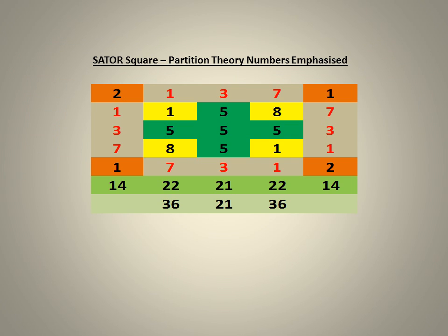The first numbers to leap out at me were those of the fine structure constant number and the number of Kabbalah, 137, associated with the greatest mystery in physics and what many consider to be the central question in natural philosophy.